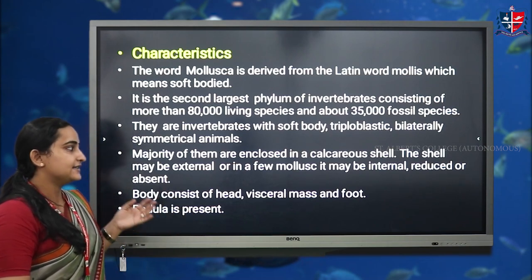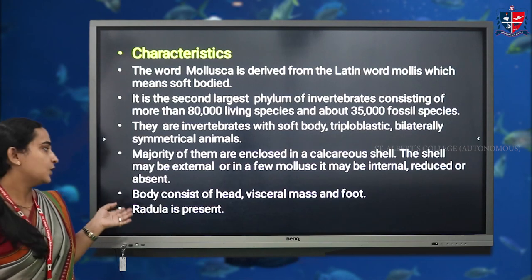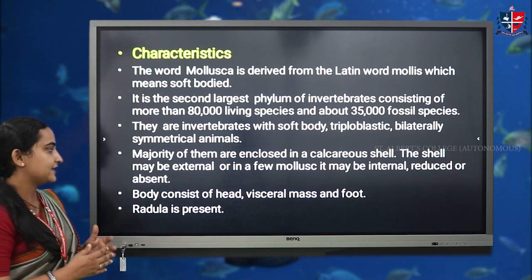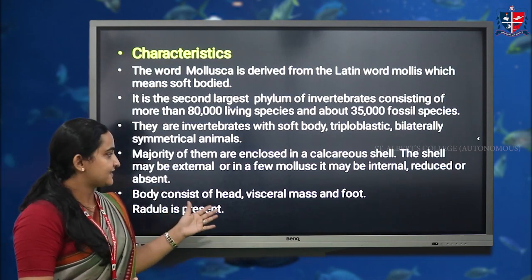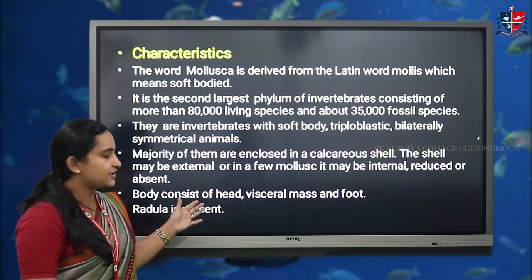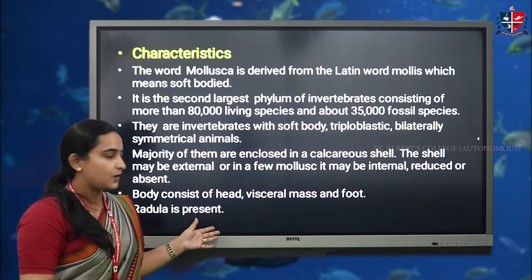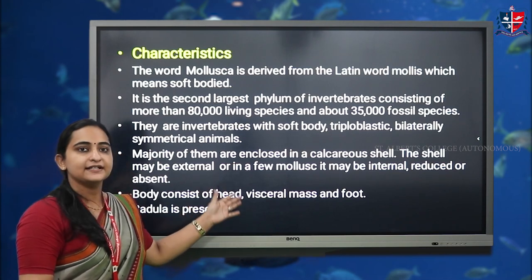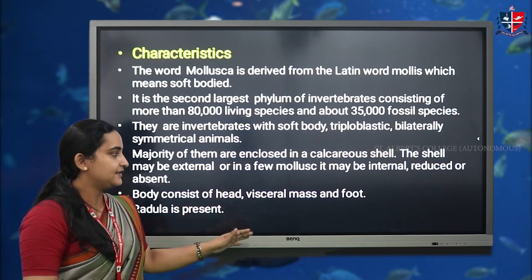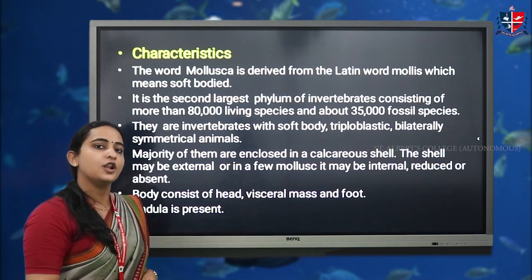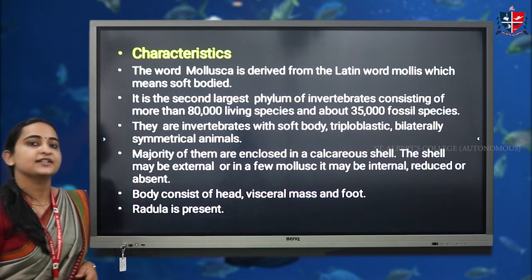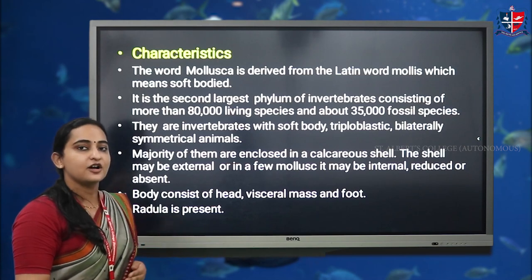This shell can be either internal, external, or in some cases reduced or absent. The body consists of a head region, visceral mass, and foot. The head region bears all the sensory organs, the visceral mass contains all the internal organs, and the foot is used for locomotion.